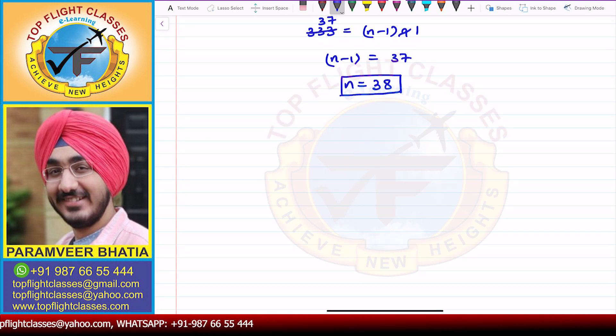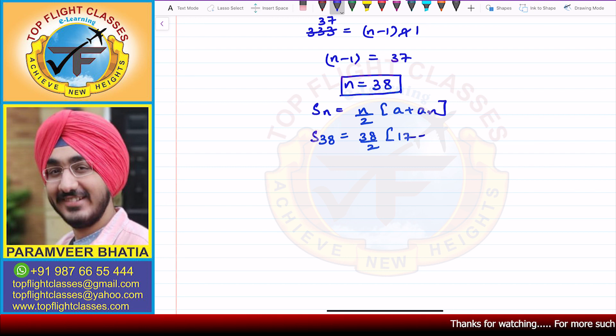Now we have sum of N terms. So sum of N terms is given by N by 2 times A plus AN. So in this case N is 38. So I get S38 equals 38 by 2, A is in this case 17, and AN in this case is 350.